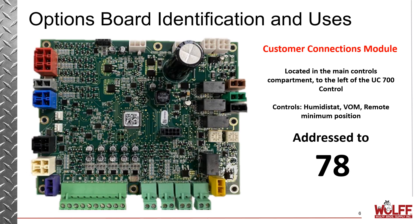Here we have the customer connections module. This module is located in the main controls compartment, just to the left of the UC 700 control. It's going to control options like the humidistat, the ventilation override, and the remote minimum position. This module must be addressed to 78.